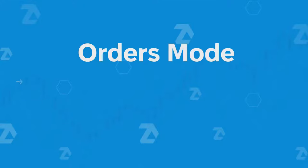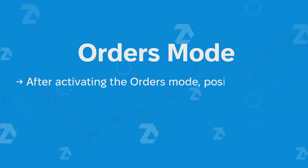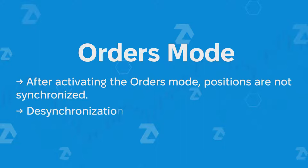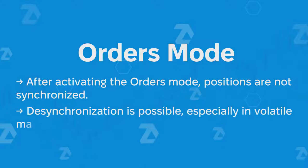It's important to note that after activating the orders mode, positions are not synchronized because the module only copies orders. Desynchronization is possible, especially in volatile markets. For example, while the provider is adjusting an order, it might be executed on the follower's end. This could lead to a scenario where the provider has no position but the follower does.